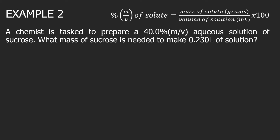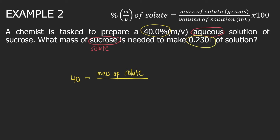Example 2: A chemist is tasked to prepare a 40% mass over volume aqueous solution of sucrose. What mass of sucrose is needed to make 0.230 liters of solution? Sucrose is our solute and water is our solvent. We will still use the formula, but this time we are given the percent mass over volume, which is 40%. So: 40 = (mass of solute) / (volume of solution) × 100. The volume given is 0.230 liters.